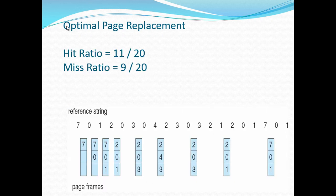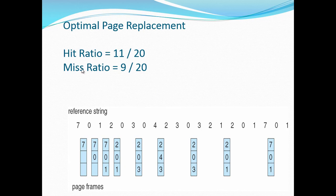Now let us consider the working of the optimal page replacement algorithm. We have a reference string with all process names and page frames of size 3. When process 2 occurs, it sees that 7 has the longest reoccurrence time among 7, 0, and 1, so 7 is replaced by 2. The next process 0 already finds its position in the page frame, so a page fault occurs. The process continues in a similar fashion, resulting in a total of 9 page faults. The miss ratio is 9 out of 20 and the hit ratio is 11 out of 20.